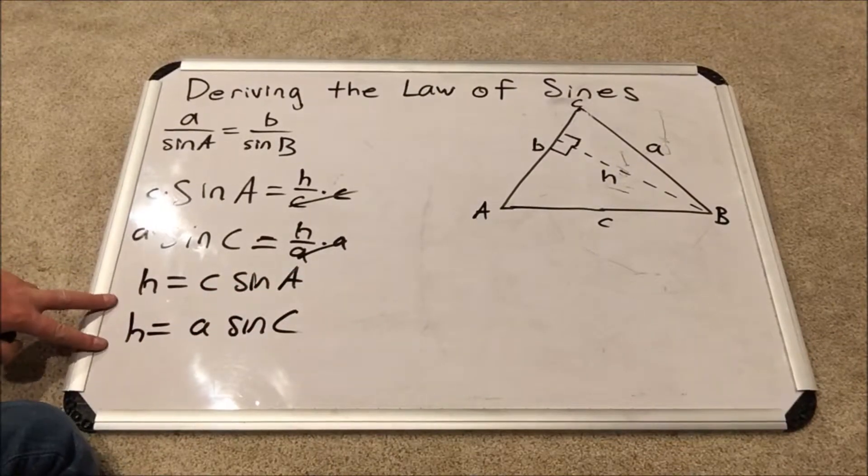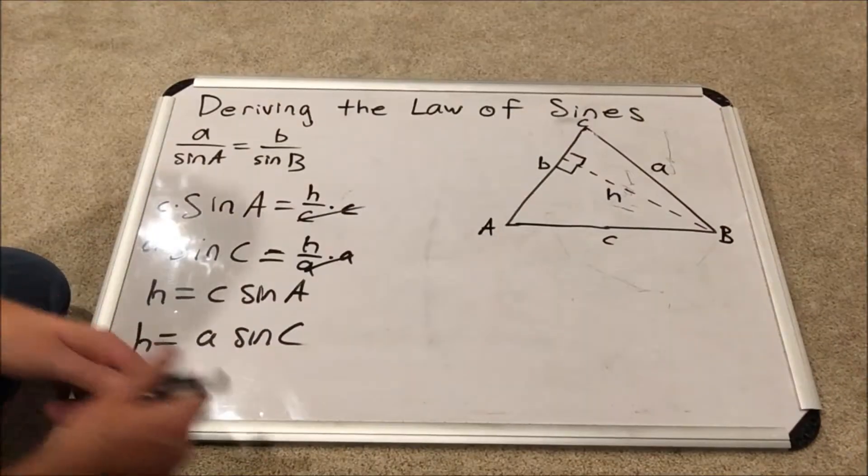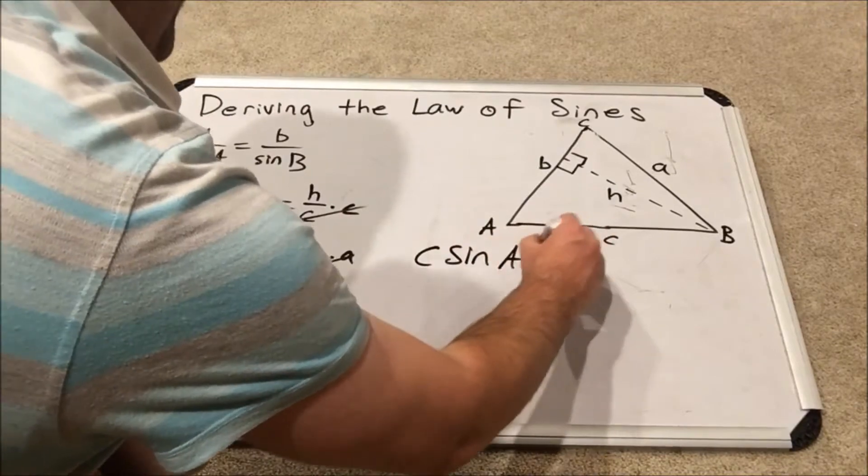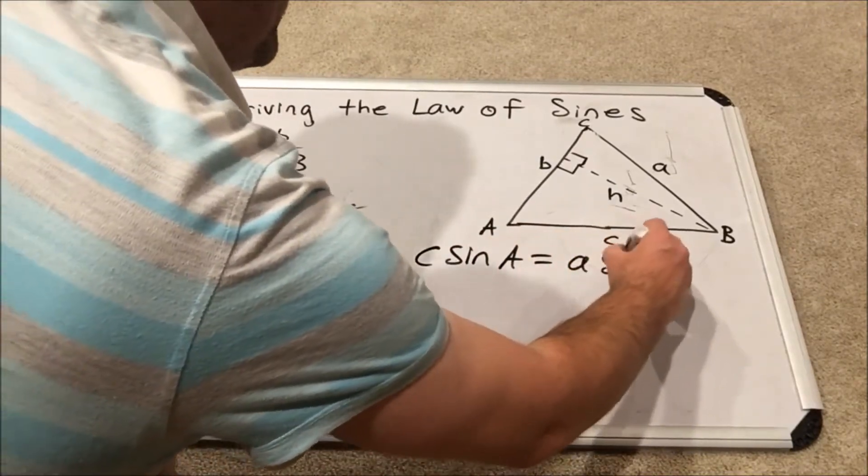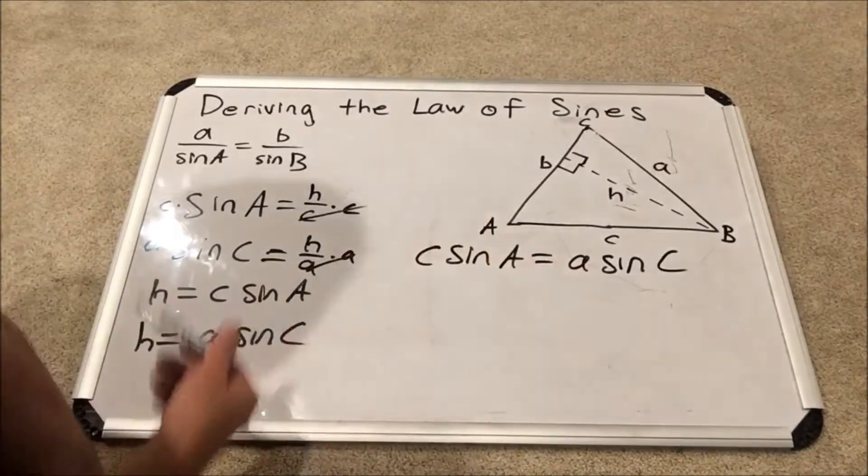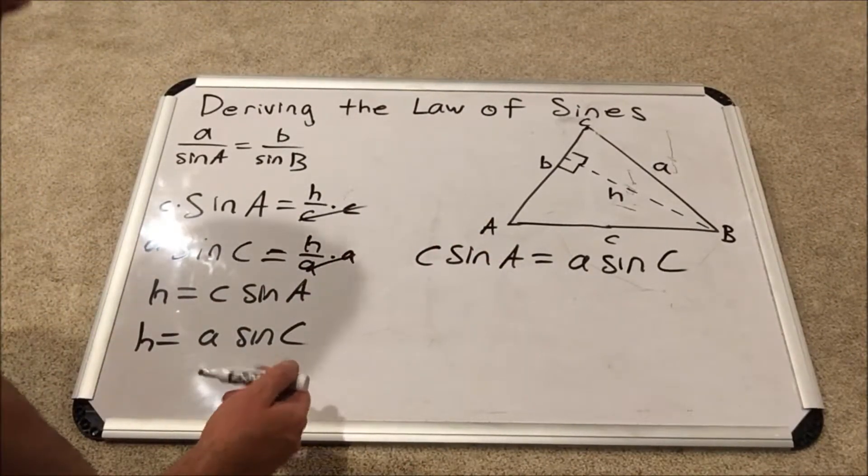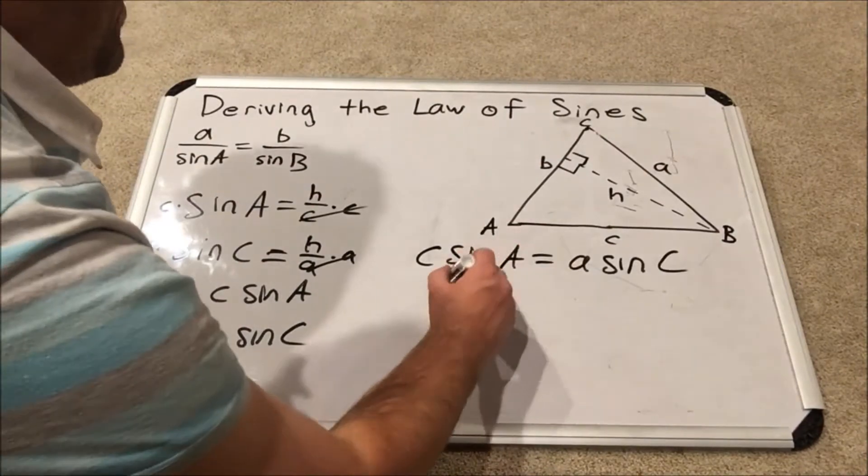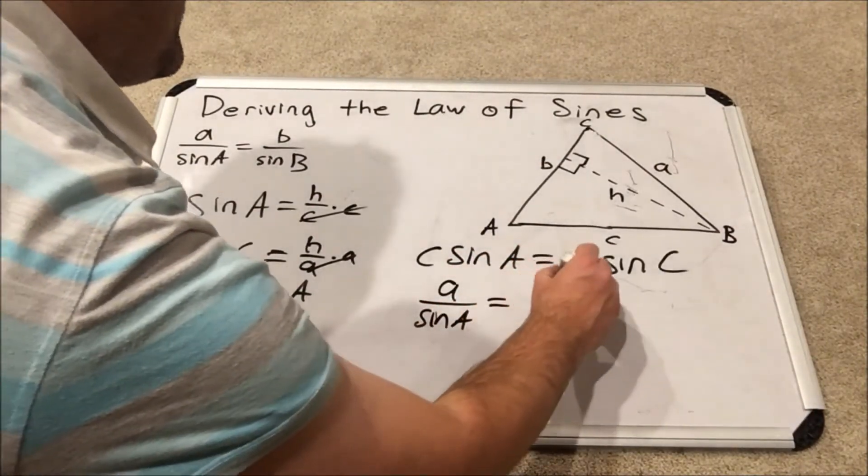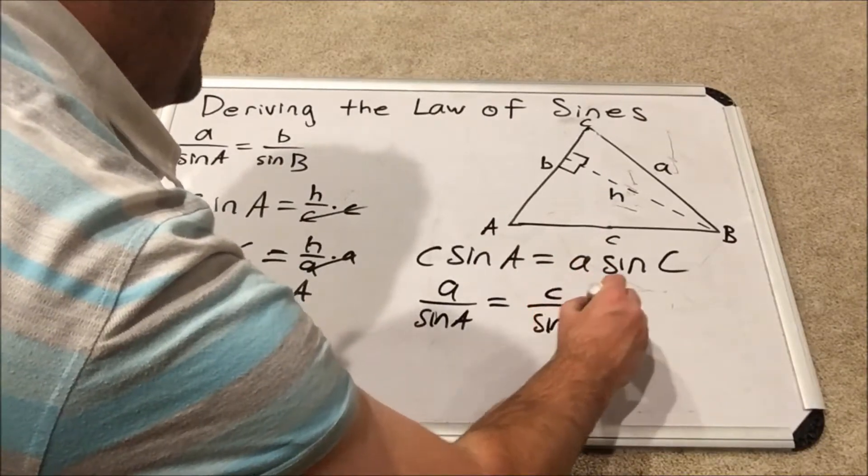By the transitive property, these two things are equal to each other. So I have C sine A equals A sine C. And again, I will divide both sides by both signs of the angles, and I will end up with A over sine A equals C over sine C.